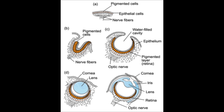The outer layer remains as a single layer of pigment epithelium. Between the two lies a narrow space representing the original optic vesicle, and from its anterior border develops parts of the ciliary body and iris.